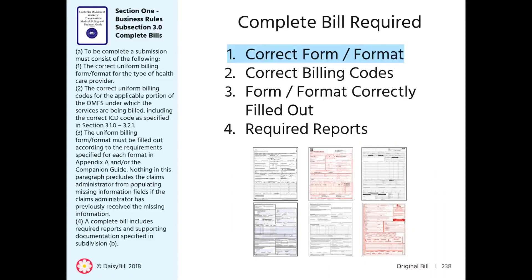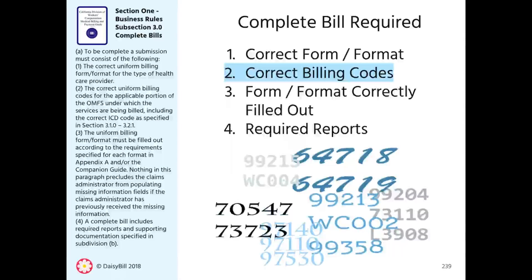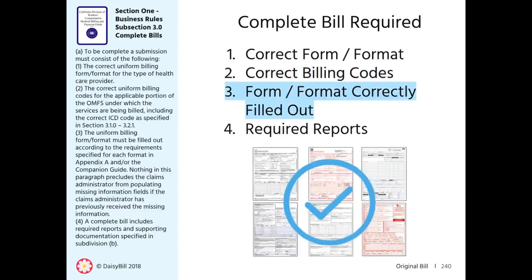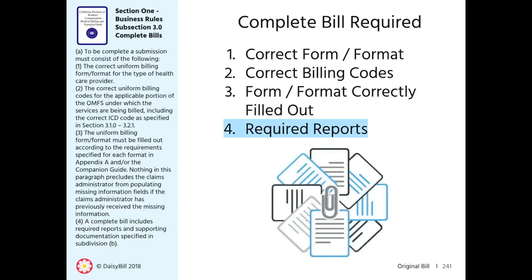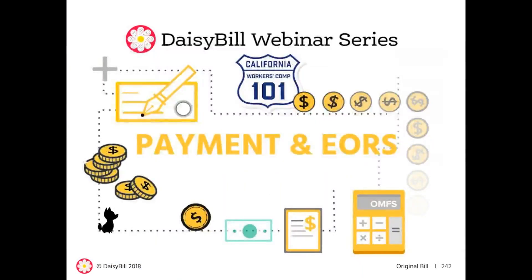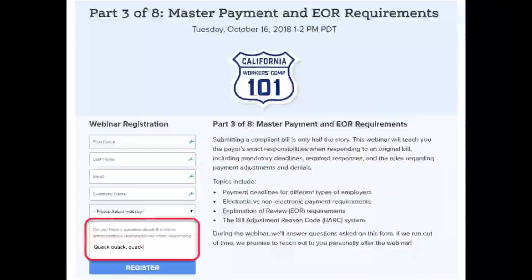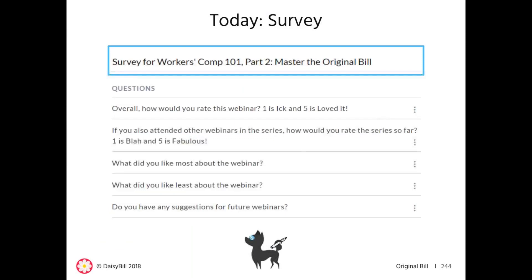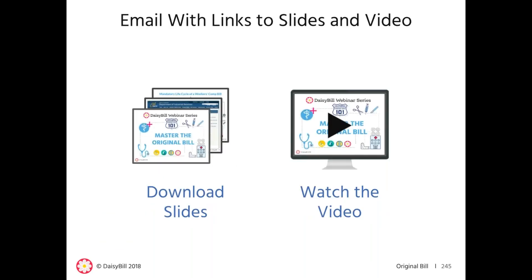To review what we covered: a complete bill consists of four parts — you must use the correct form, use correct billing codes, correctly fill out the form, and send the required reports or supporting documents with the bill. The next webinar in our 101 series is about payments and EORs — we'll cover how to interpret EORs and the claims administrator's responsibilities when responding to workers' comp bills. After today's webinar, you'll receive an email with links to watch the recording, download the slides, a sample 5307.11 contract, and the patient intake form.